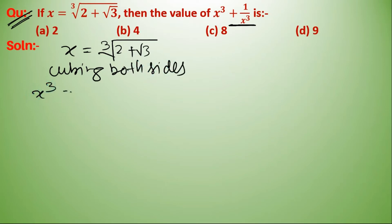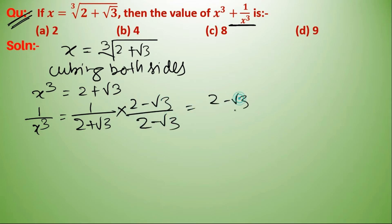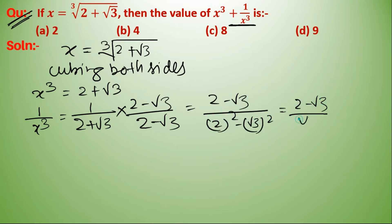So x cube equals 2 plus root 3. For 1 upon x cube, we get 1 upon (2 plus root 3). Rationalizing the denominator gives (2 minus root 3) upon (2 squared minus root 3 squared), which equals (2 minus root 3) upon (4 minus 3), so 1 upon x cube equals 2 minus root 3.